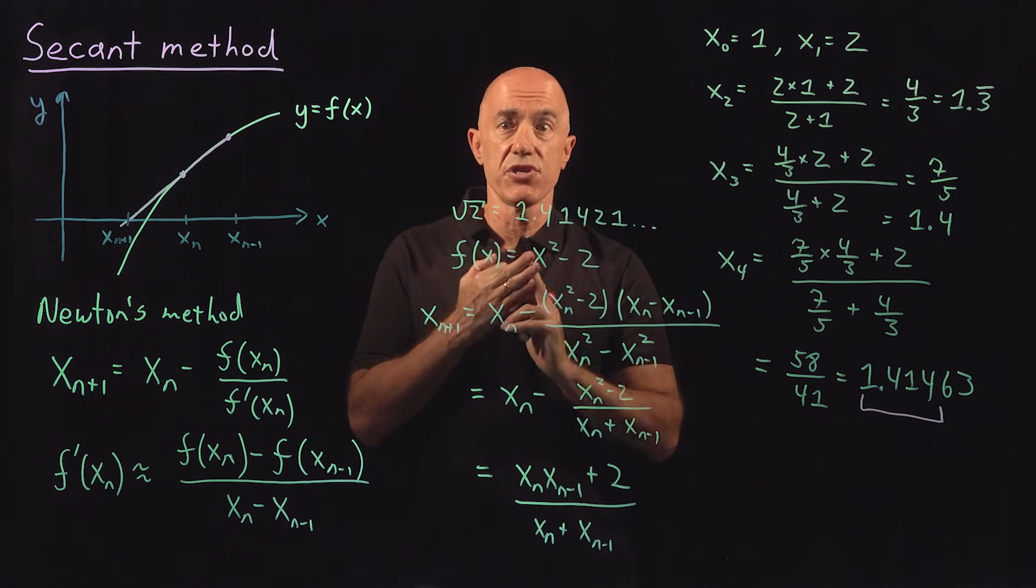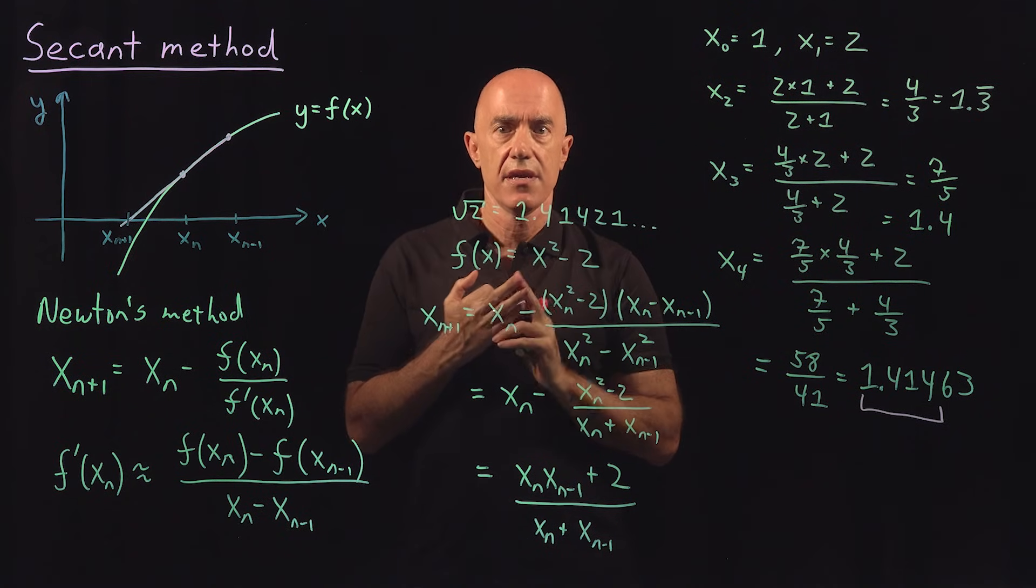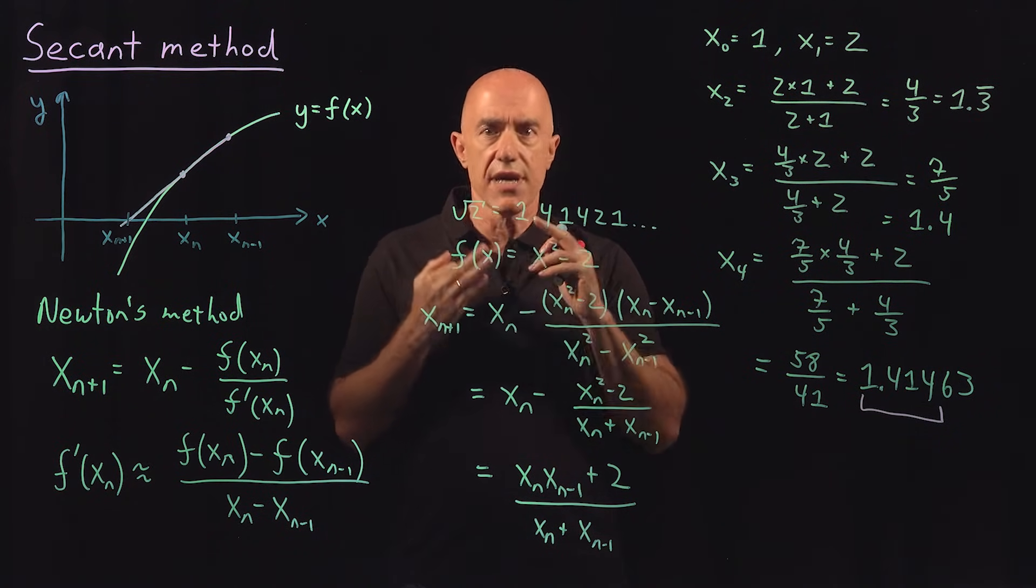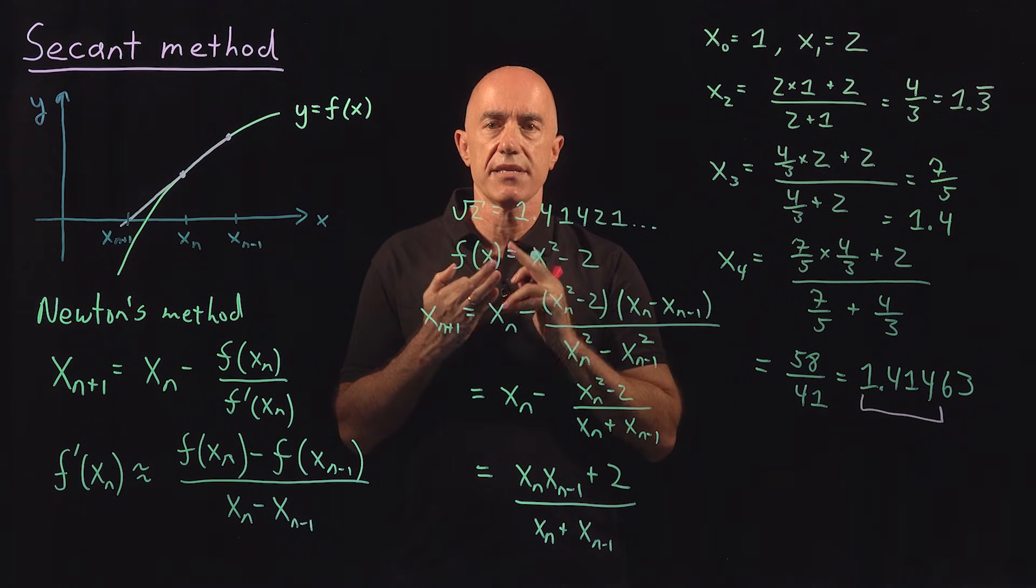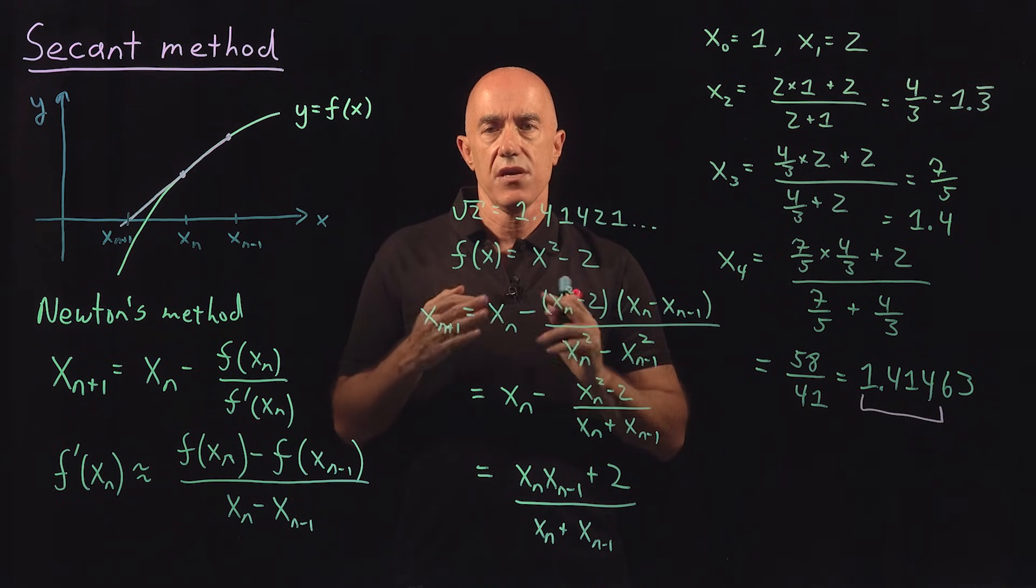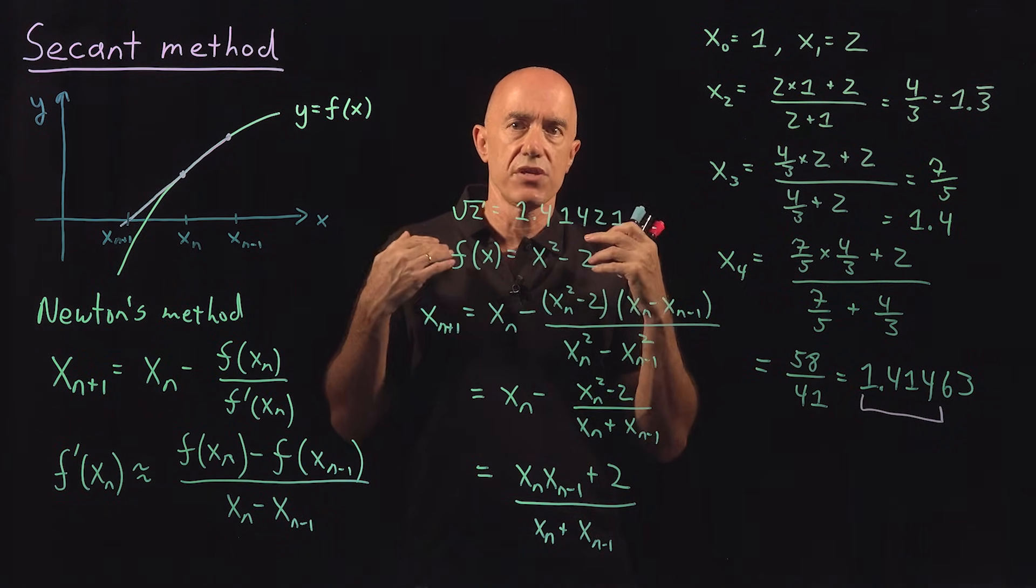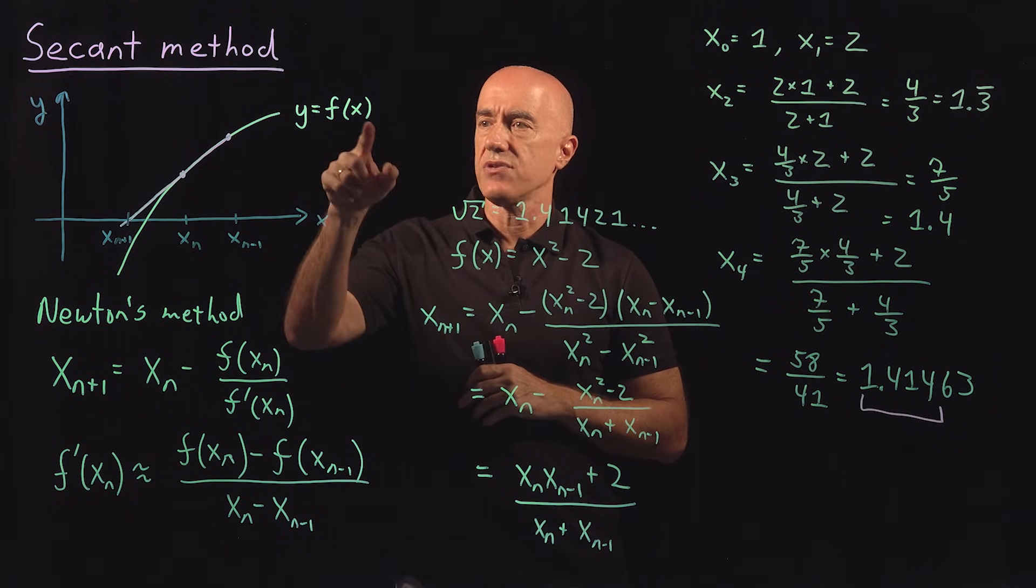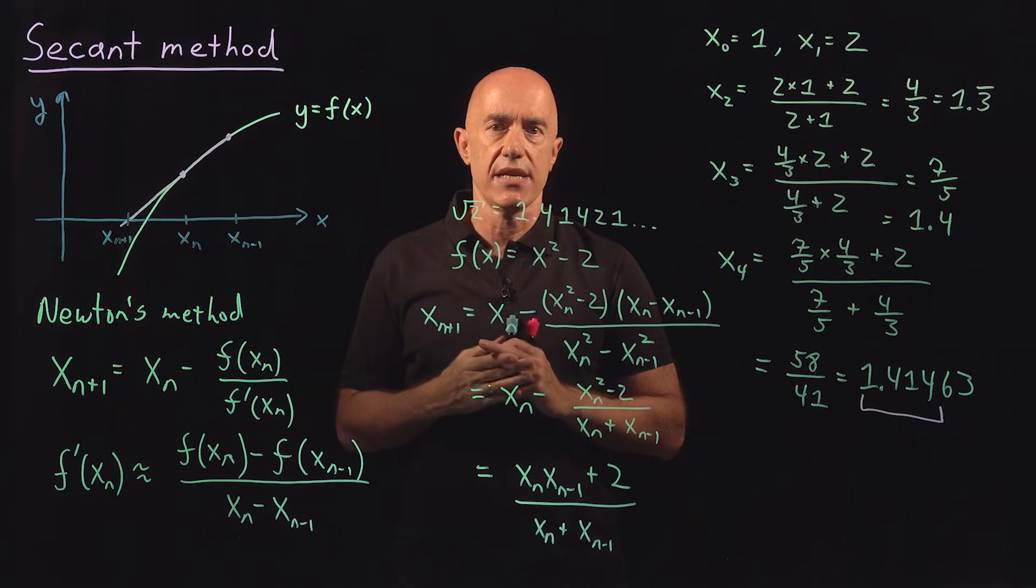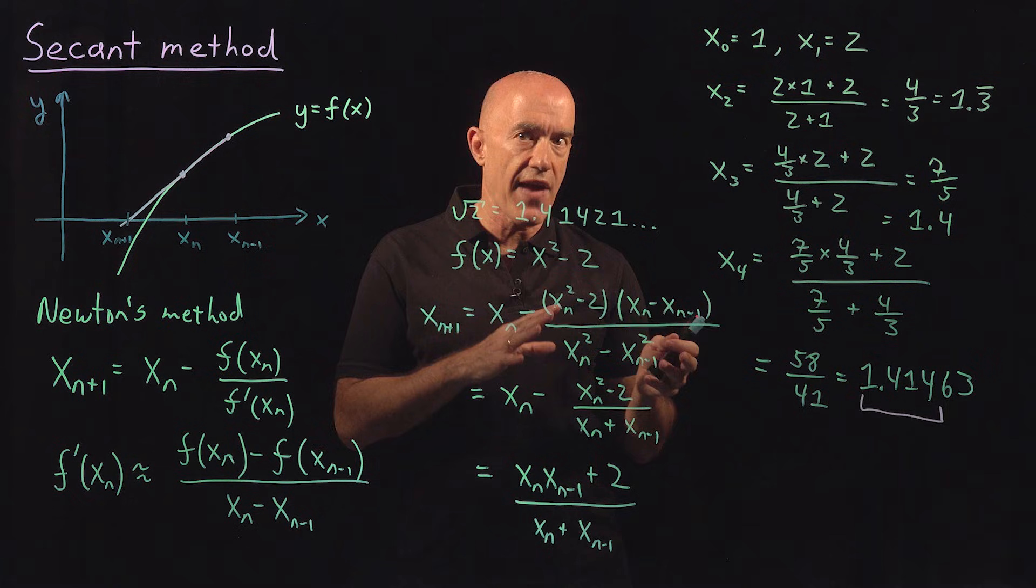Finally, we have the secant method. You need two initial guesses for the root. The root doesn't have to be bracketed. You approximate the derivative in Newton's method using the difference formula for the derivative. You usually use secant method when you don't know how to take the derivative of this function analytically, but you can evaluate it at any x that you like.